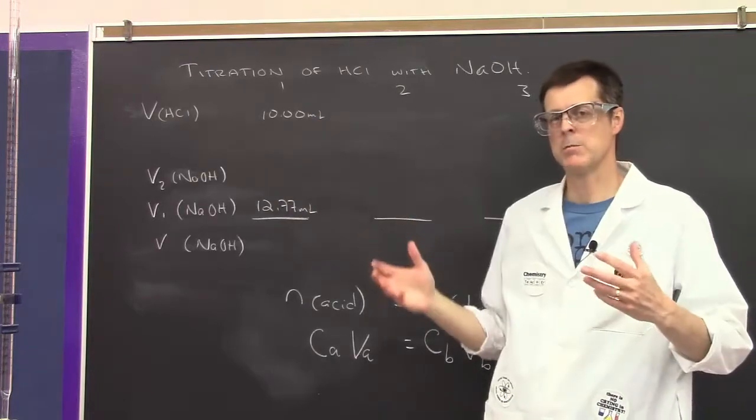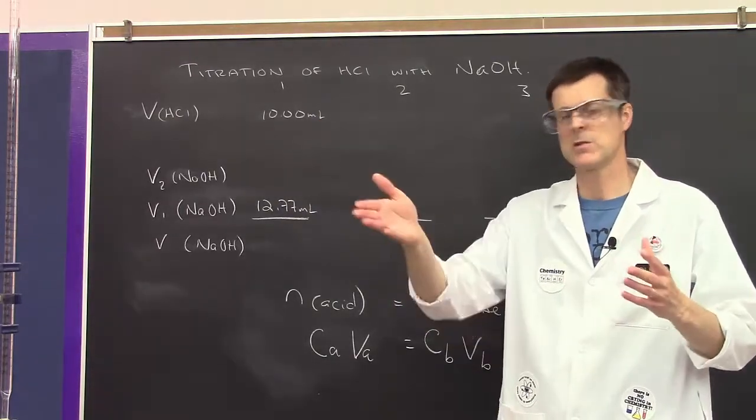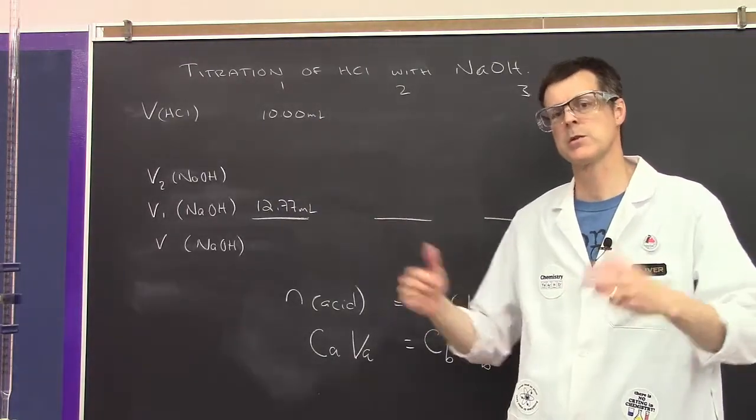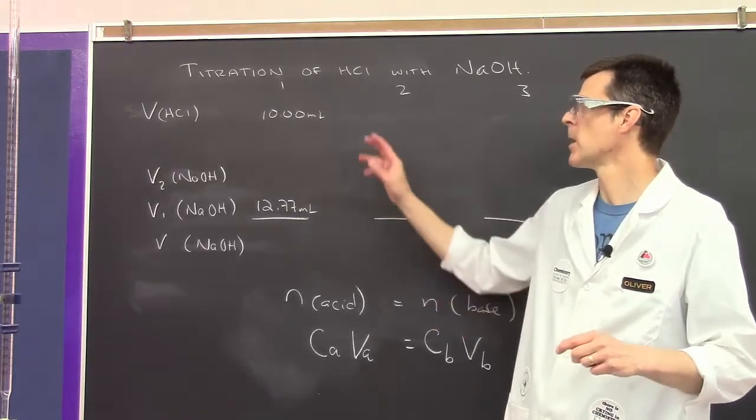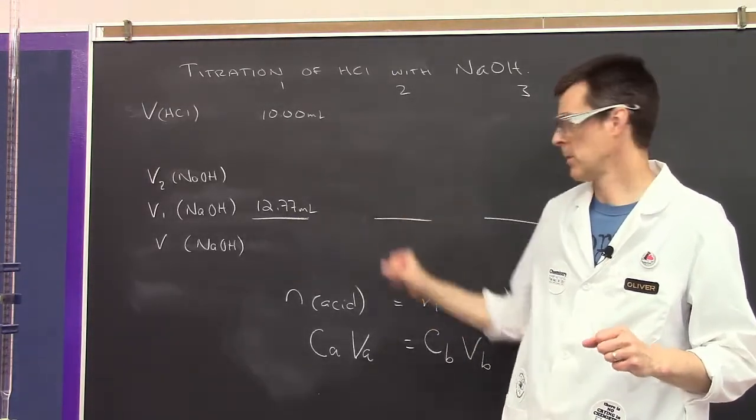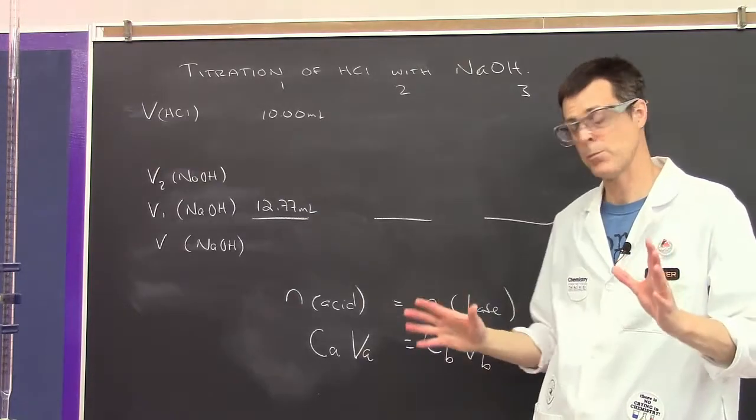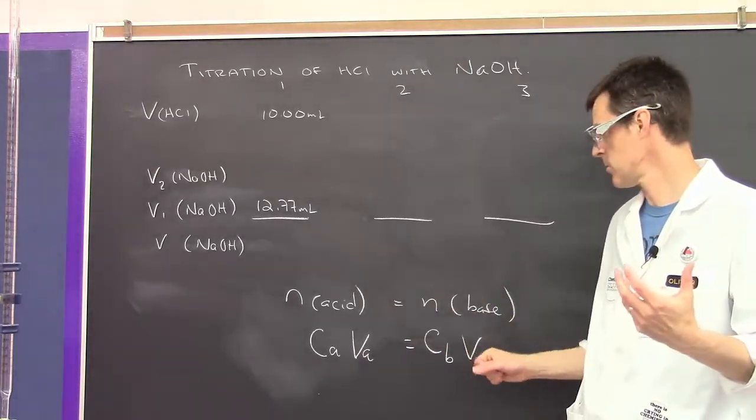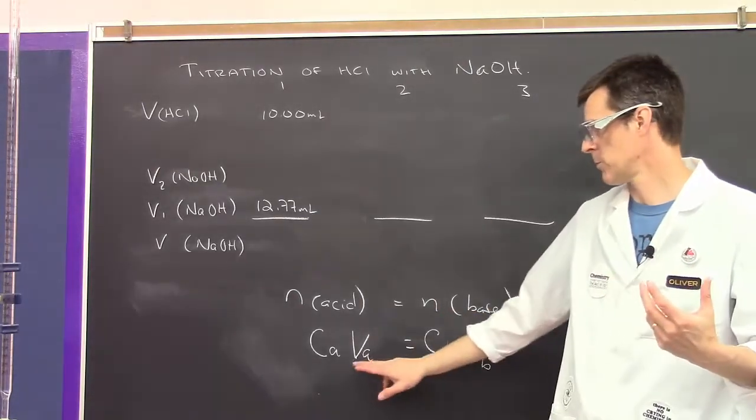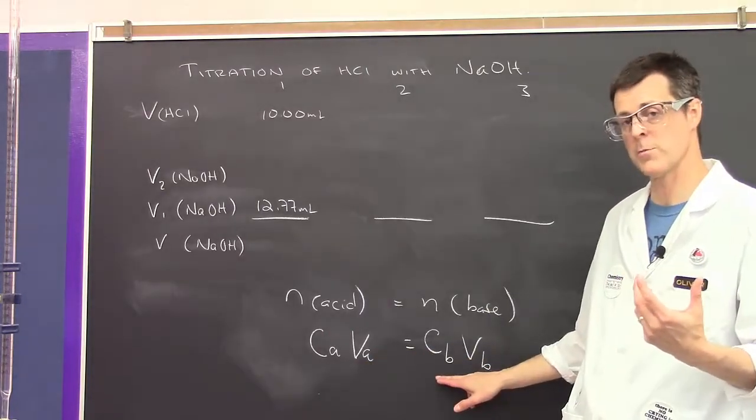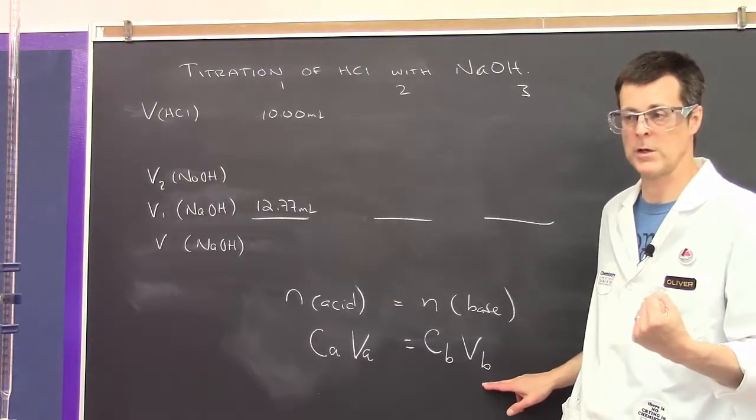I'm going to start with 10 milliliters, and if it doesn't take much then maybe I'll go up to 20 to give it a sporting chance. When I'm done with my measurements, I'll know the volume of the acid, the concentration of the base, and the volume of the base.